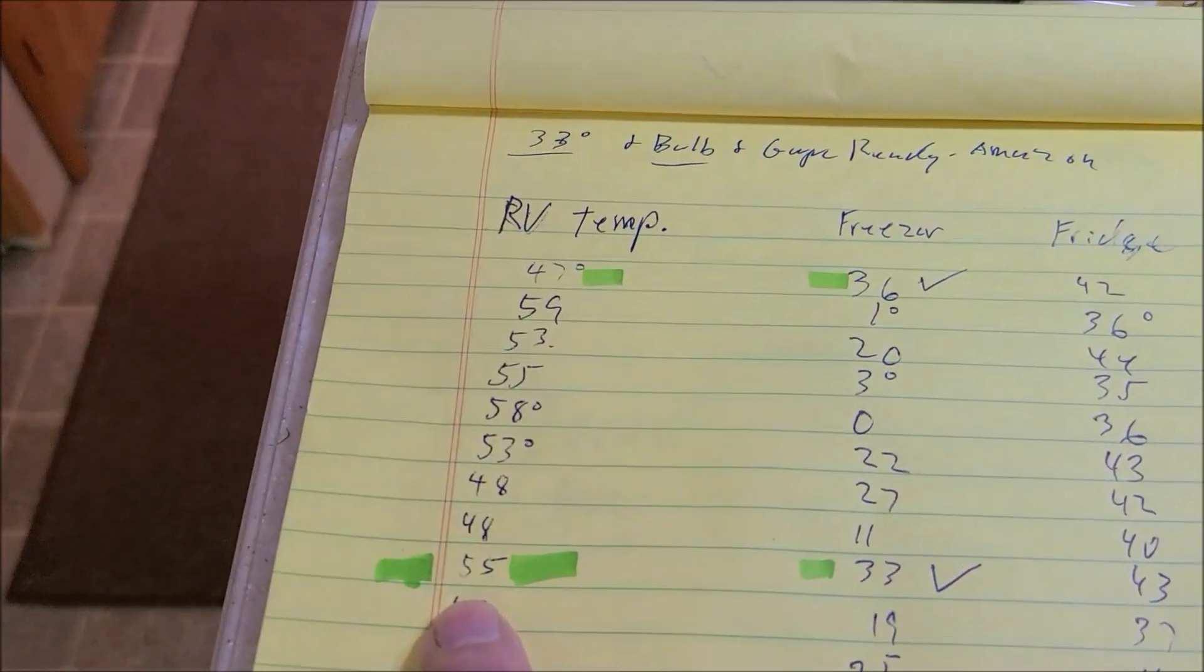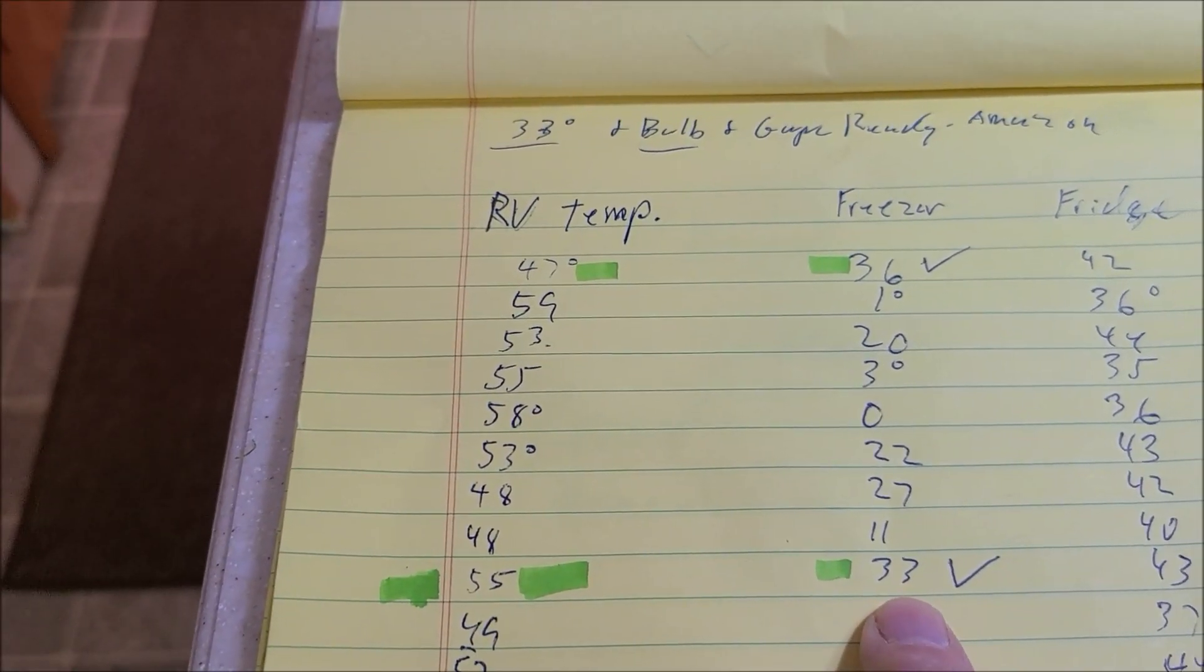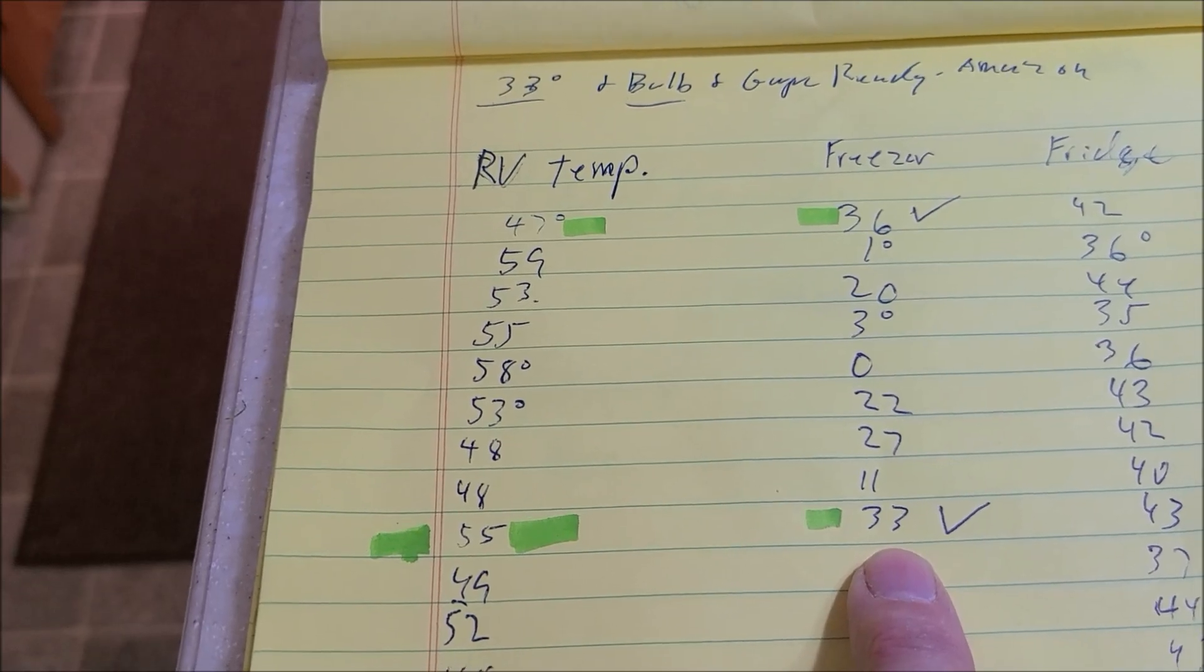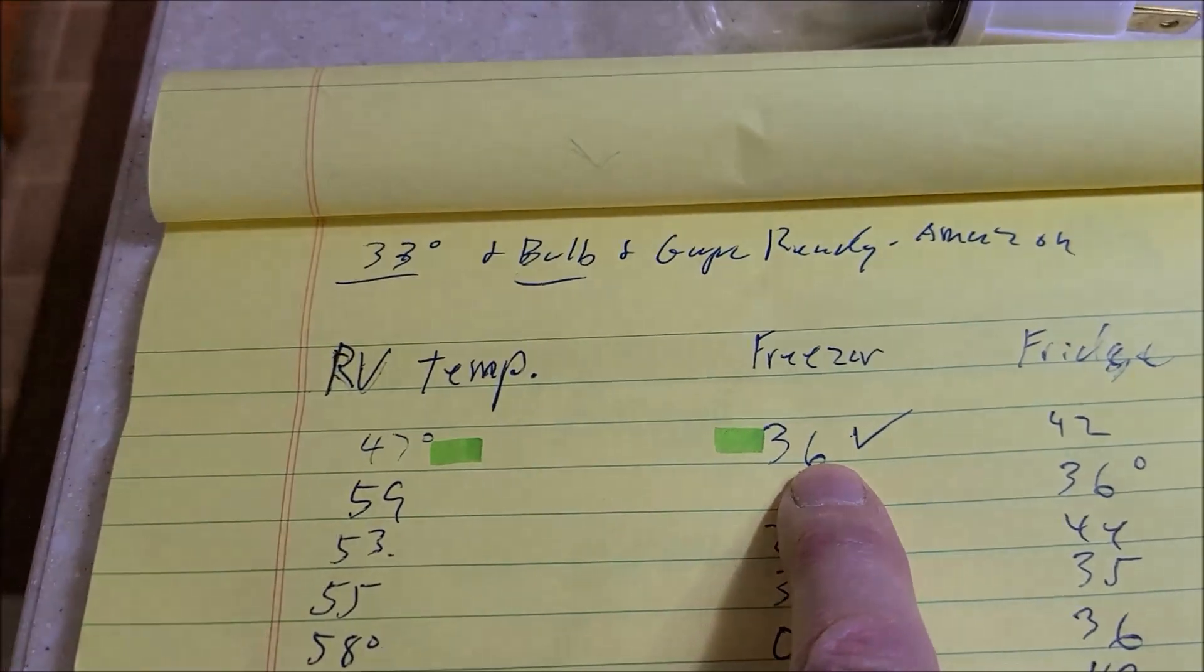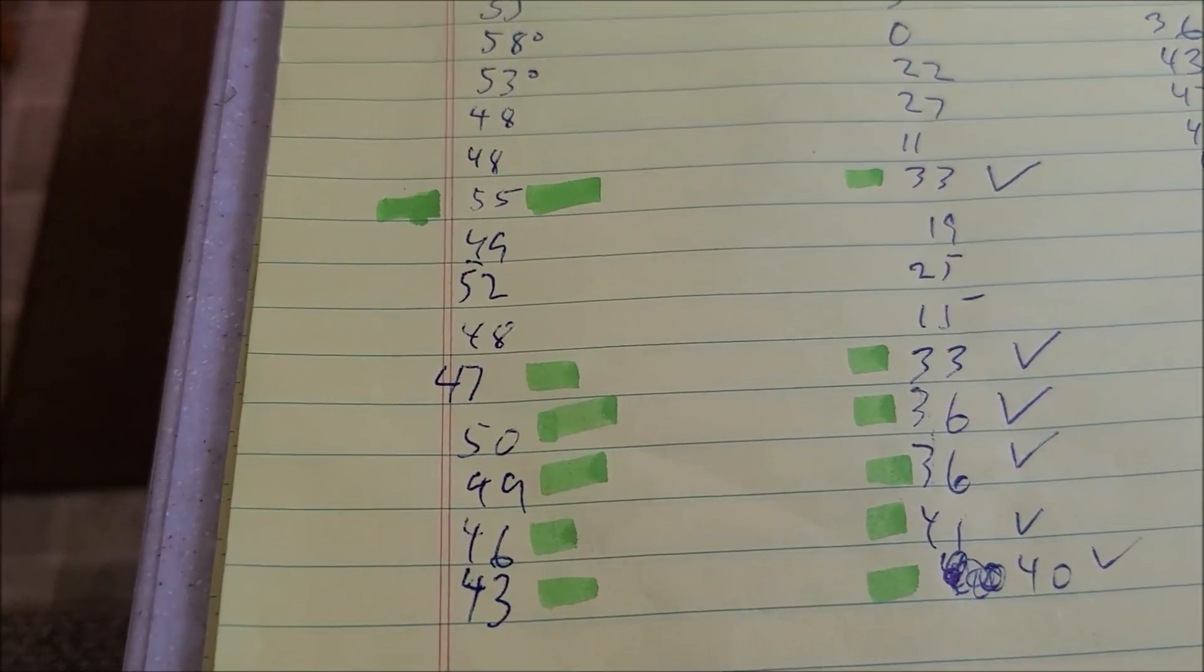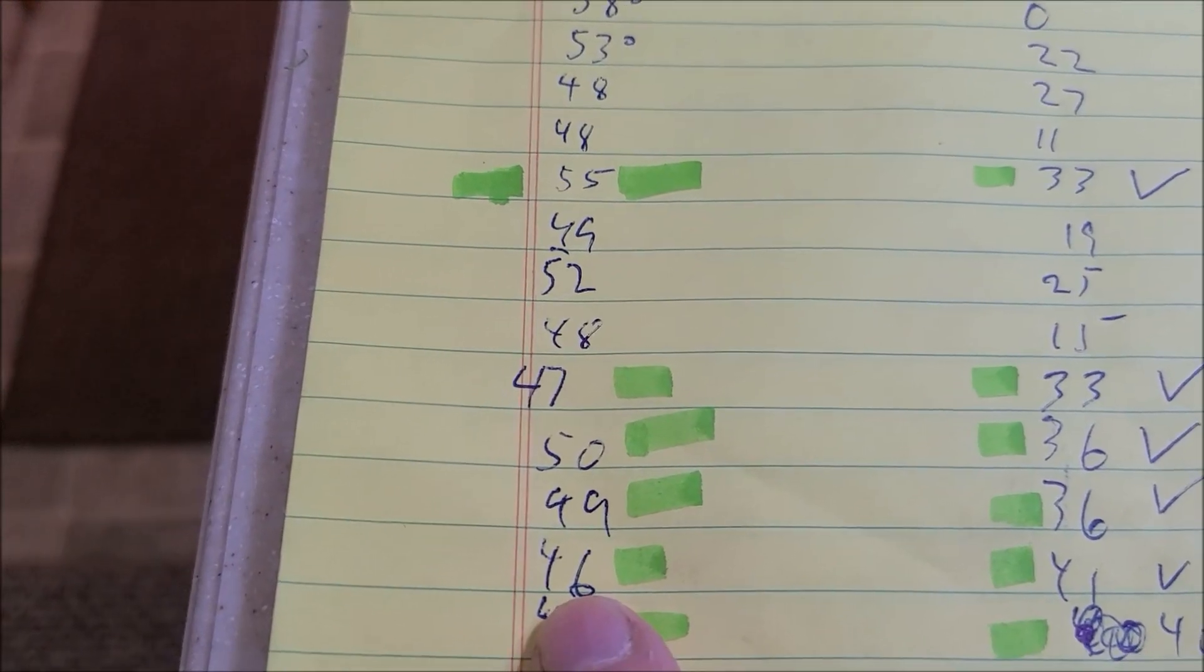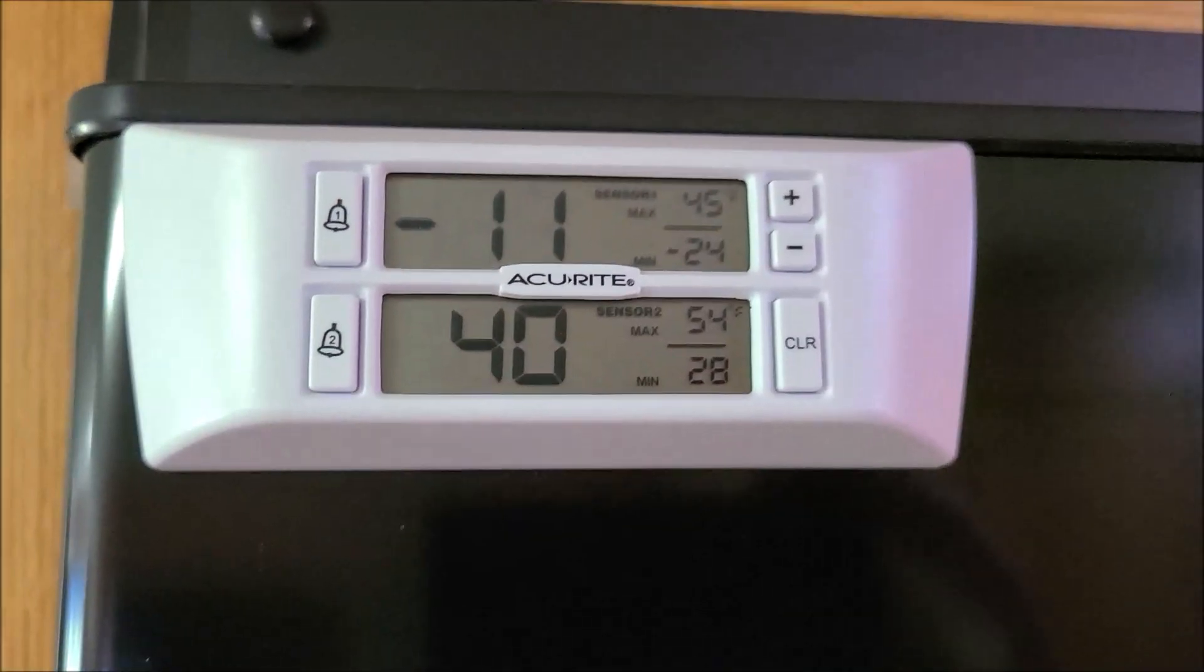And you'll notice, as it got colder, of course it kept getting worse. But 55 degrees, you can see we hit 33 degrees in the refrigerator. At 47 degrees in the RV, the freezer went up to 36. And so the highest temperature you can see here, at 46 degrees in the RV, one day I found 41 degrees. And the cool thing about this monitor, I want to point this thing out too. This is great for RVers.